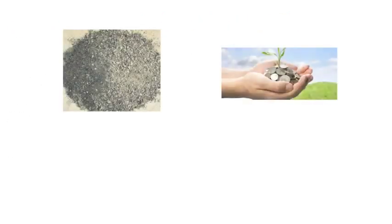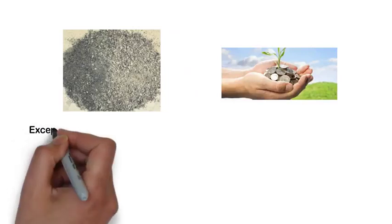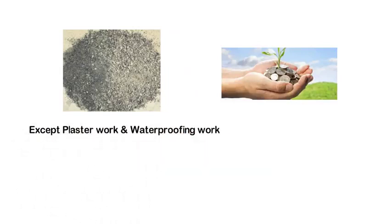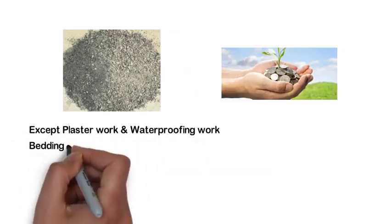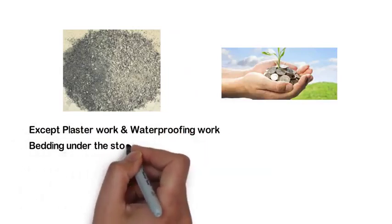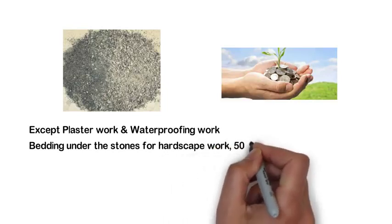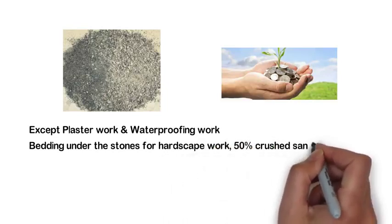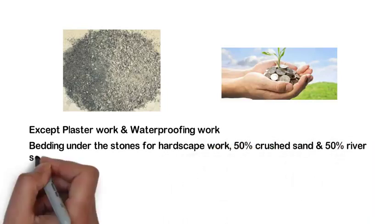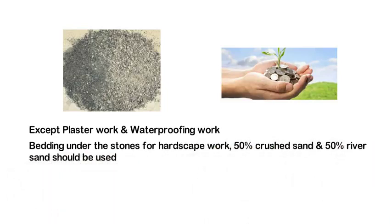It is recommended to use crushed sand as it is an economic and ecological alternative to natural sand. Crushed sand can be used in construction for all items except plaster and waterproofing work. For bedding under stones for hardscape work, 50% crushed sand and 50% river sand should be used for better results.